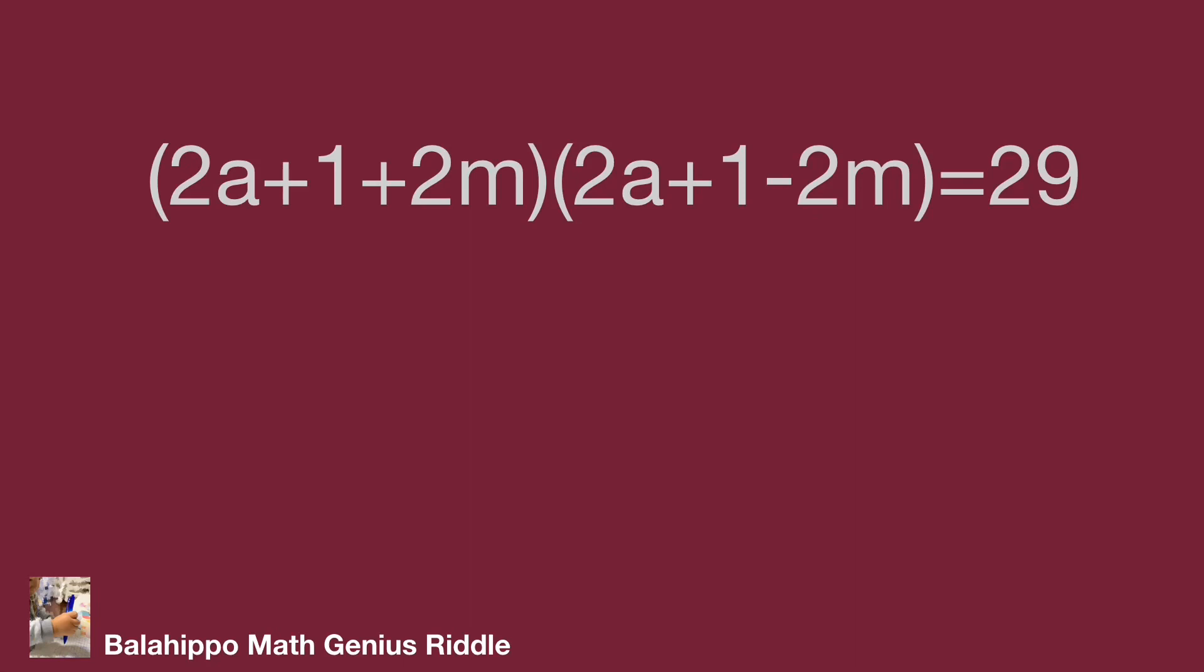a and m are positive integers, so a and m are larger than 0. Then for these two quantities multiplied to equal 29, it could be 2a plus 1 plus 2m equals 29 and 2a plus 1 minus 2m equals 1. From here we can find the value from these two new equations.